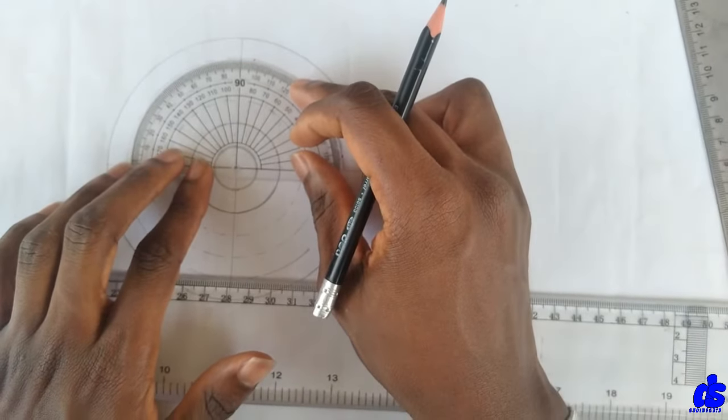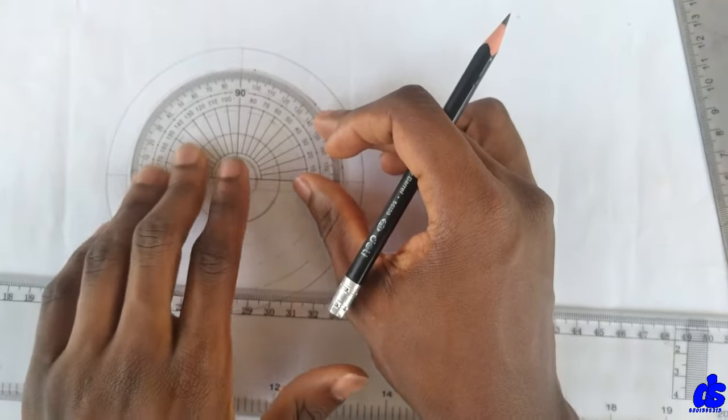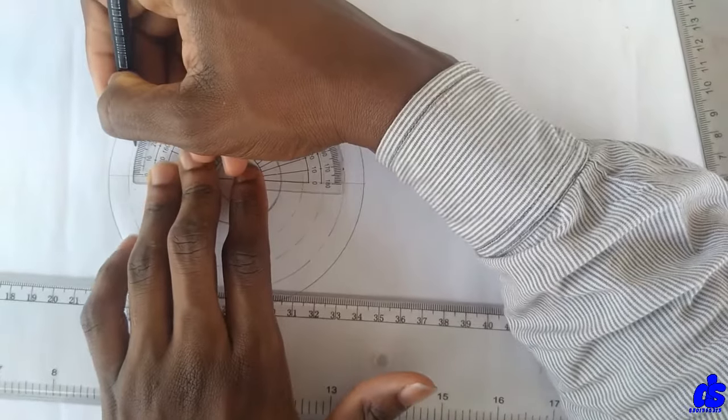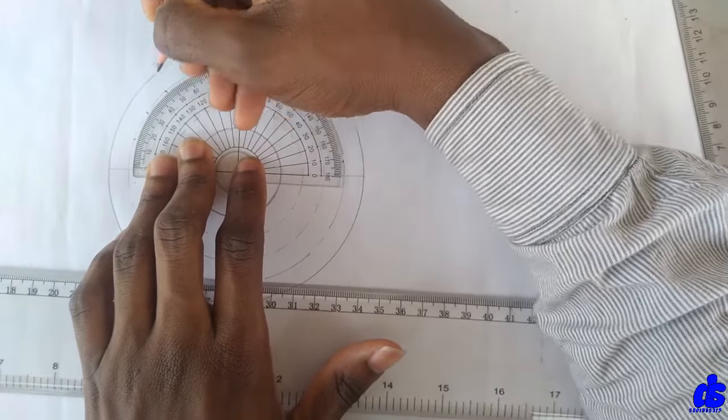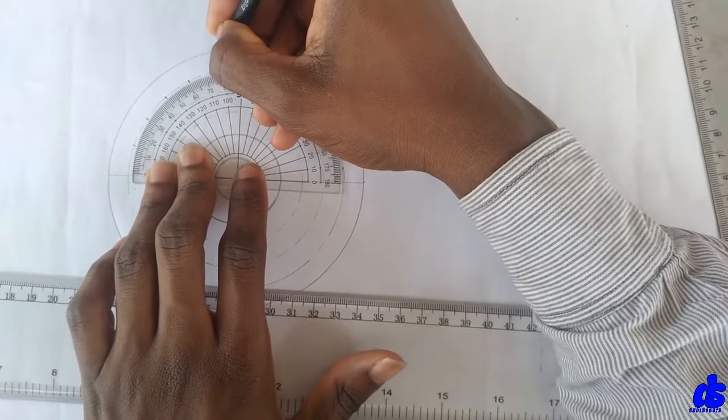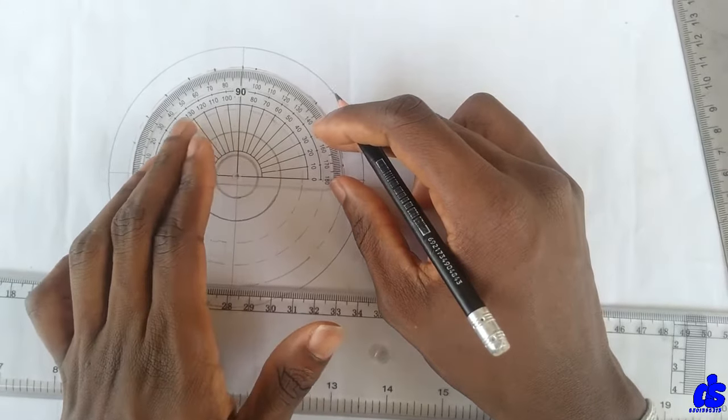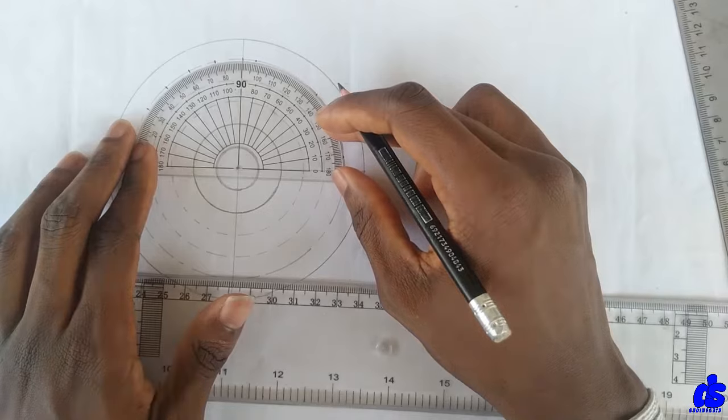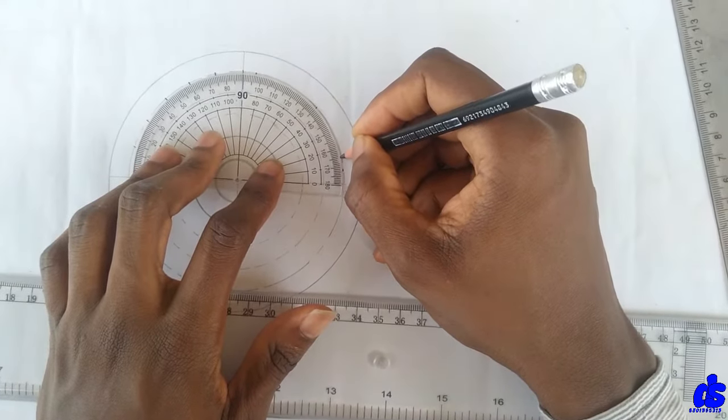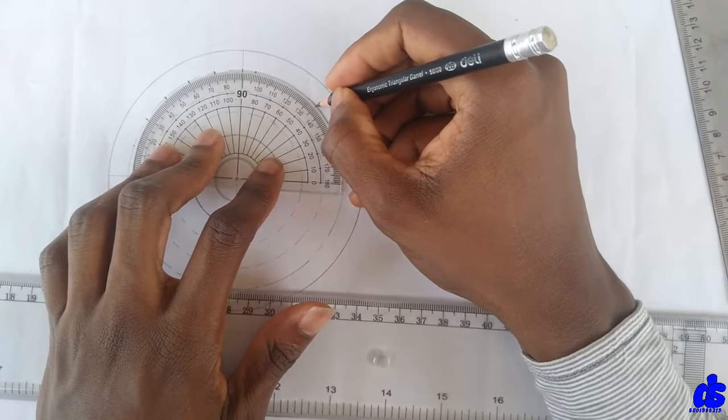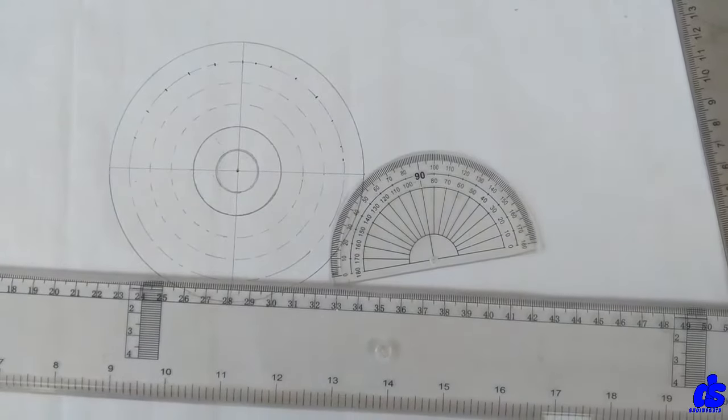Then we'll mark. Right, so this is my protractor. All right, so I'm going to mark out 15 degrees. So we have 15 here. All right, so we have 15 here. This way we have 15, 30, 45, 60, 75. All right, we only need to do for only one side.